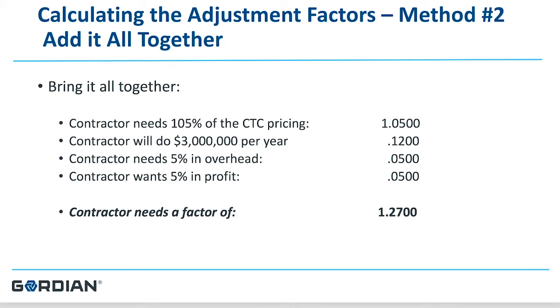Understanding the unit prices and their value is critical to your assessment and calculation of factors. Somewhere in the middle is the right adjustment factor for your company. The risk of a low adjustment factor is that you'll be offered one project and quickly realize that at such a low factor, you cannot make money. The risk of a high adjustment factor is that the owner may call you out on only one project and find your proposal value very high relative to their budget. So carefully consider as you calculate your factor.